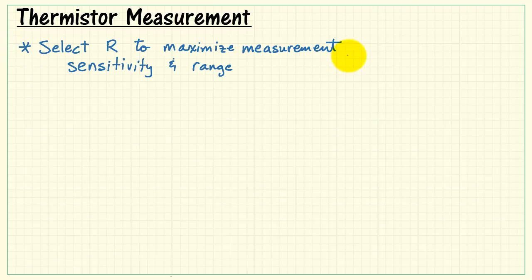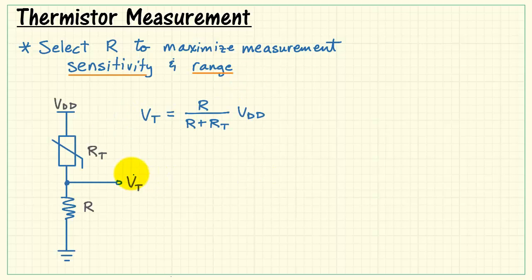Now let's investigate how you can select the value of the fixed resistor R to maximize your measurement sensitivity and measurement range. Take another look at the voltage divider arrangement.